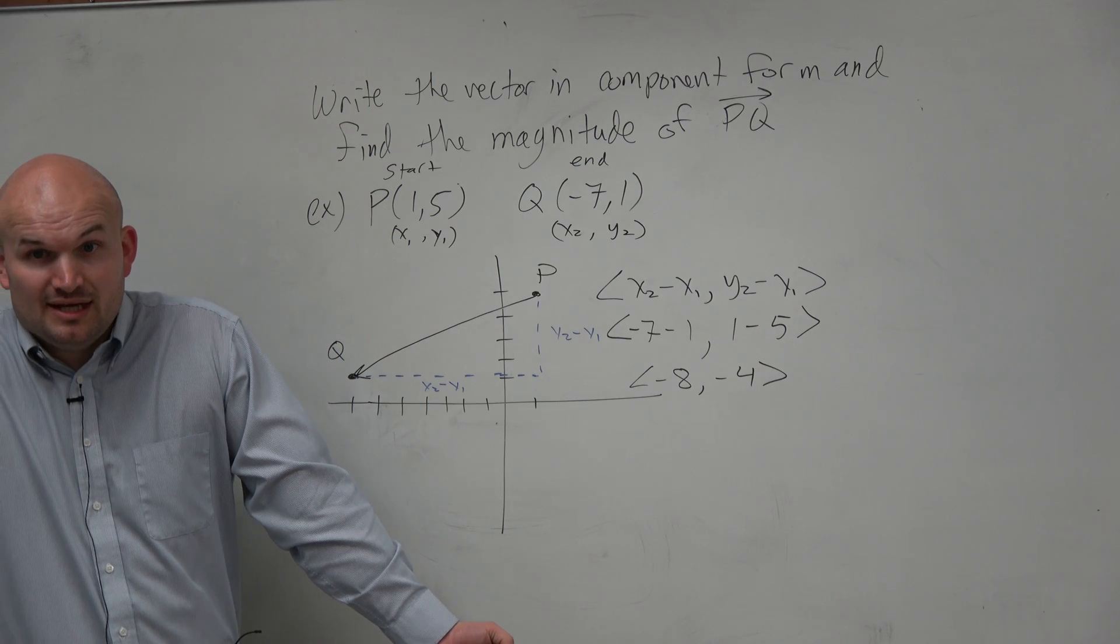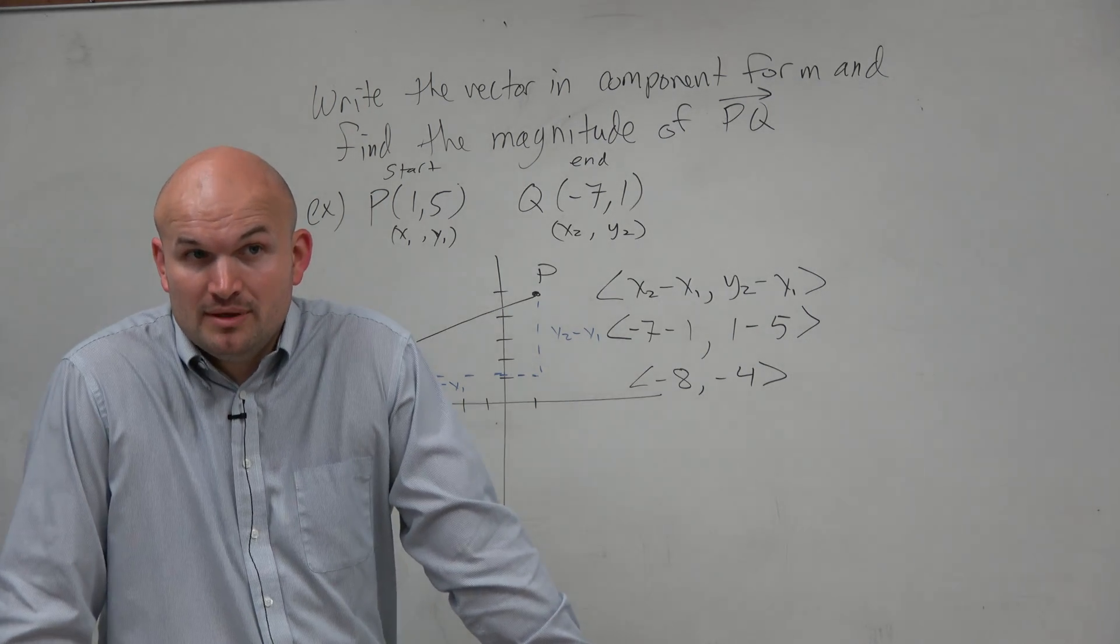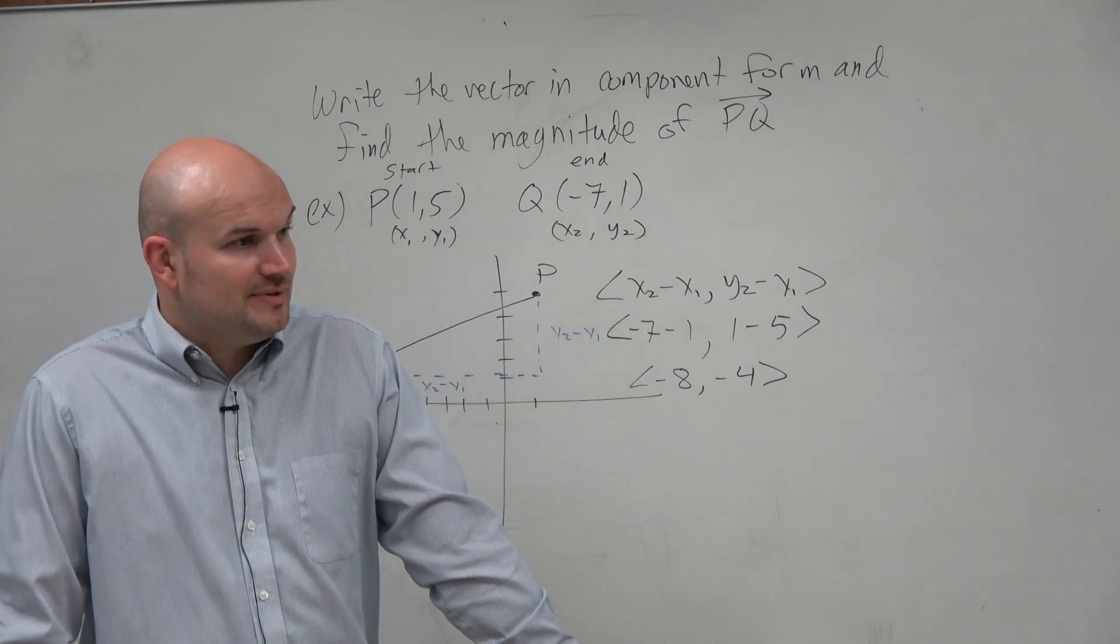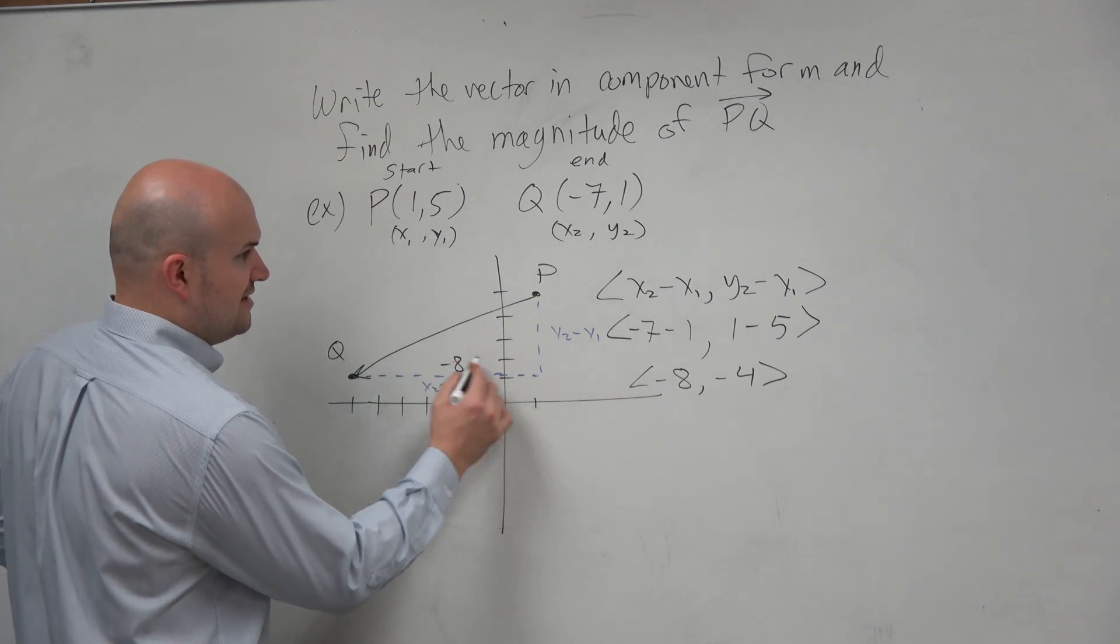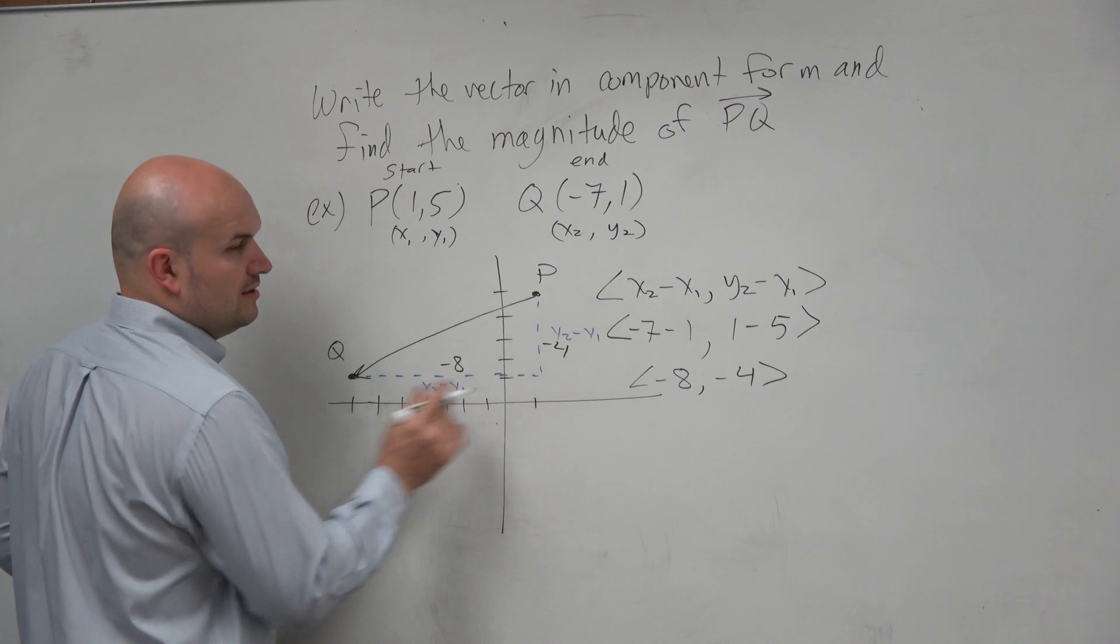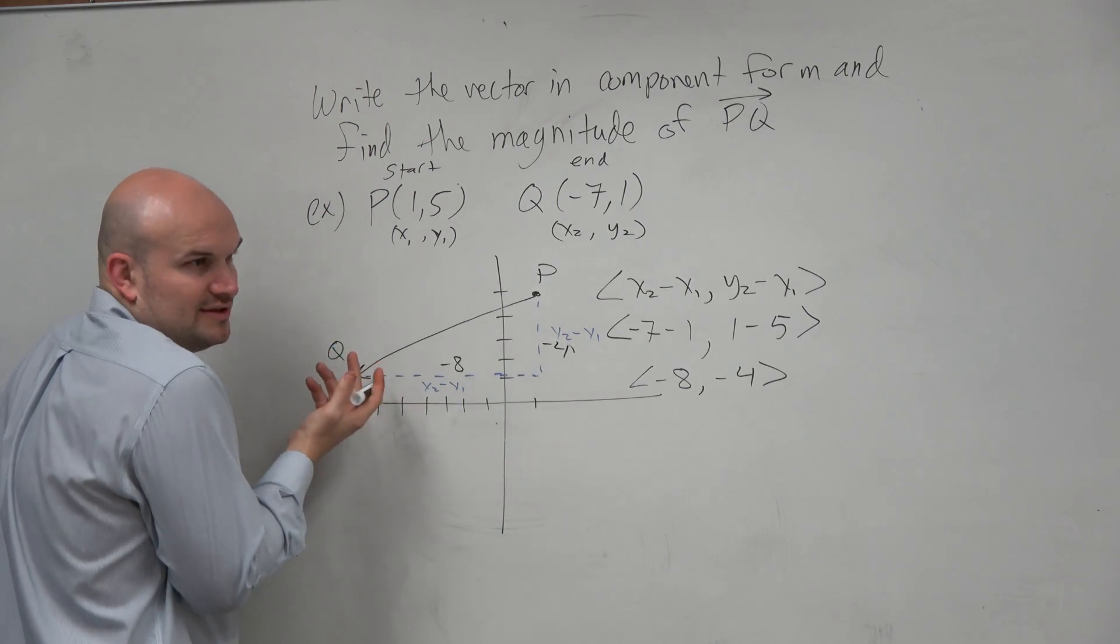Now, what's nice about doing that is once I have something in component form, I can simply just use this. Basically, this is saying -8 and -4. Well, guys, I can just use the Pythagorean theorem, basically.